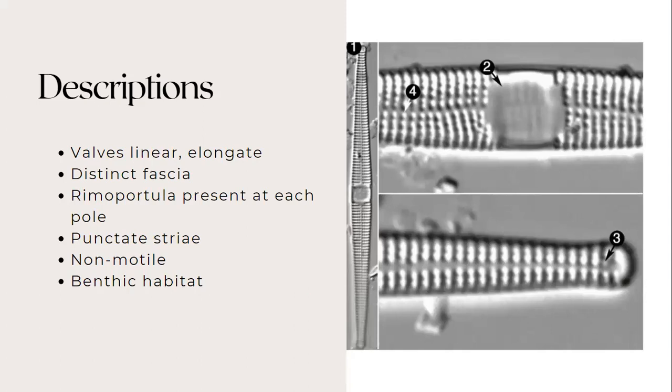the valves are elongate and linear to lanceolate, with capitate to rounded poles. The valves have a central area with a distinct fascia. There is one rimoportula at each apex that is diagonal to the sternum. Though this feature can be difficult to distinguish on light microscope. The axial area is linear and these striae are parallel and are finely punctate. Also, this is non-motile and found in benthic habitat.